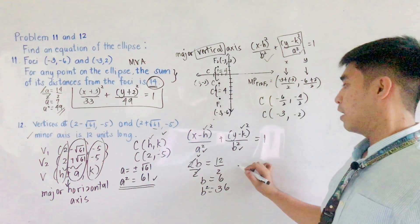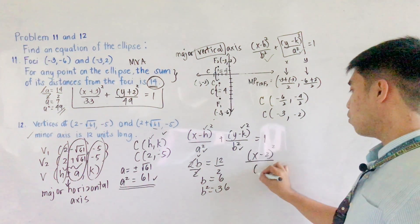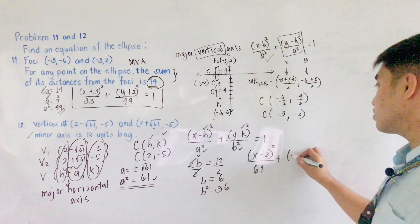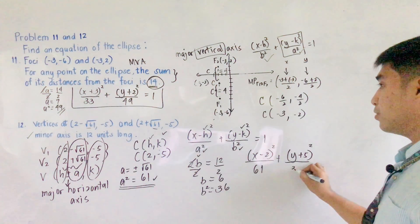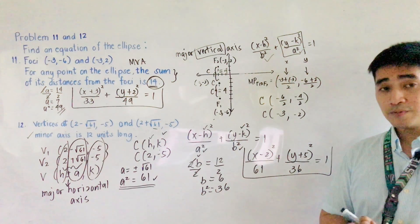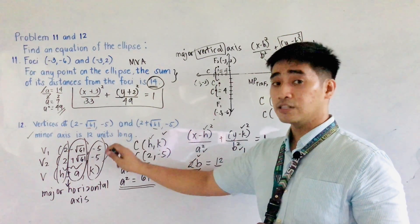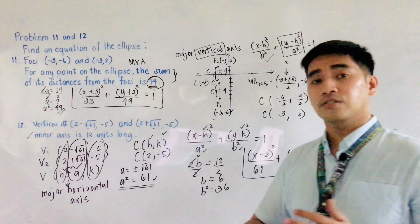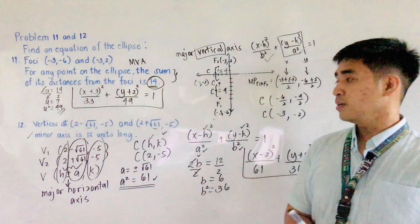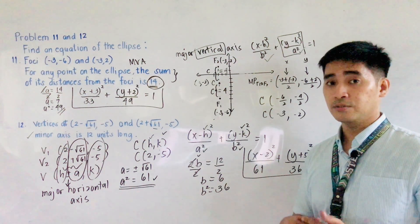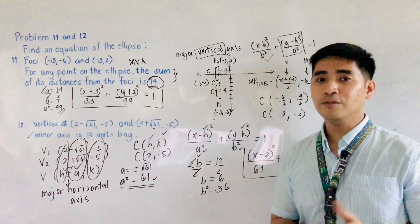We are now ready to substitute into the standard form. With h equals 2 and k equals negative 5, the equation becomes: (x minus 2) squared over 61 plus (y plus 5) squared over 36 equals 1. This is the equation of the ellipse given the vertices in this form. These are just reminders of how I solve the equation of an ellipse given different conditions. I hope you learned something today.